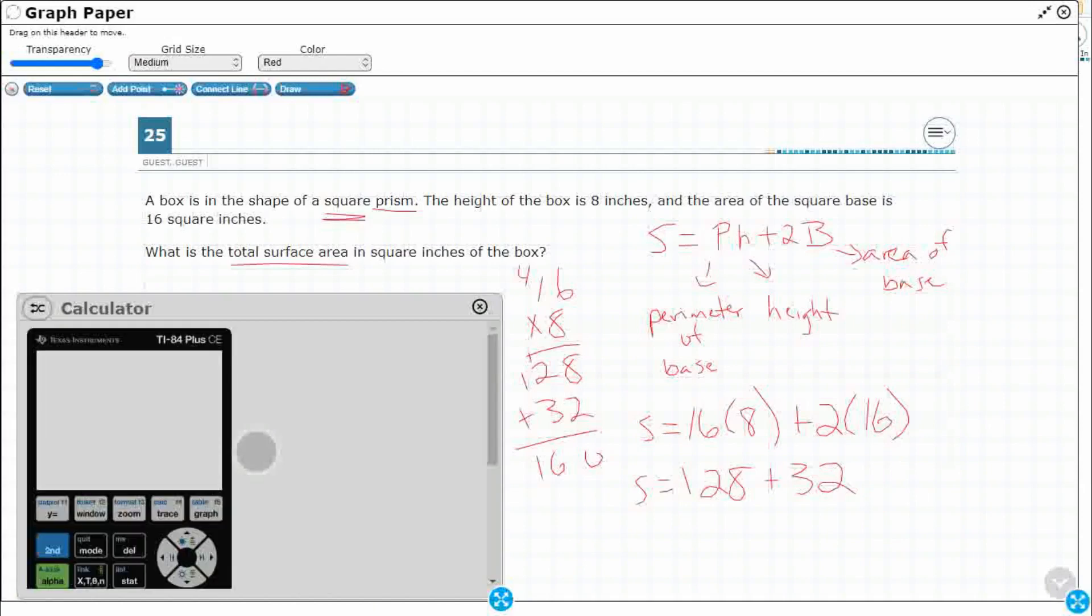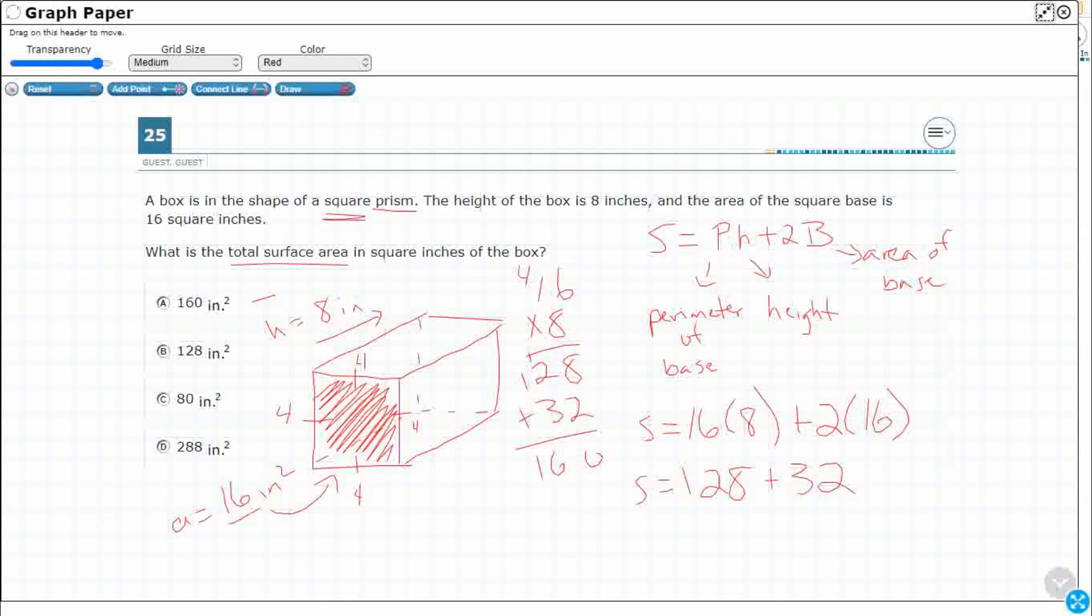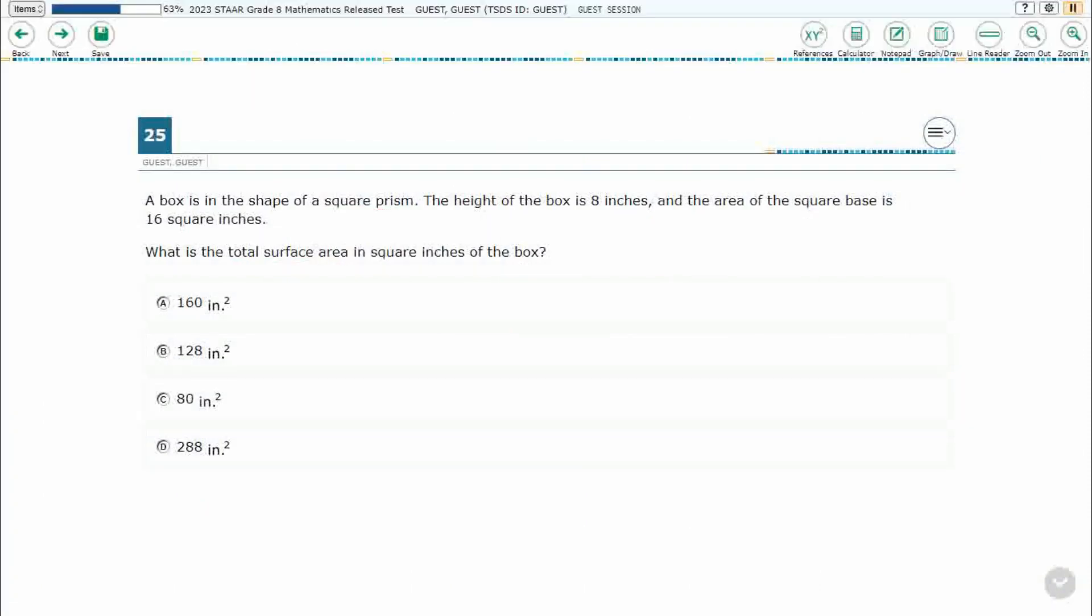And I'm just going to go ahead and enter in this equation right here. S equals, I'm going to do 16 times 8 plus 2 times 16, just to verify. And it is that 160. So it's going to be 160 inches squared, right? And that is our A answer. And that is the total surface area, 160 inches squared.